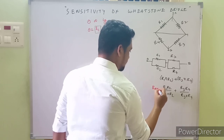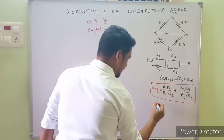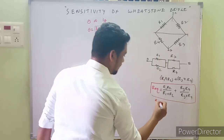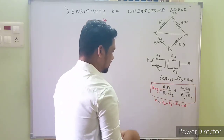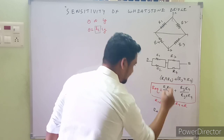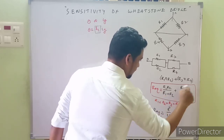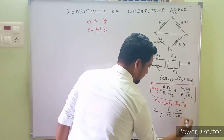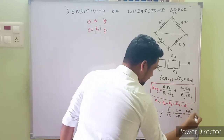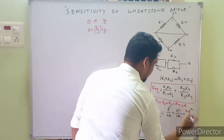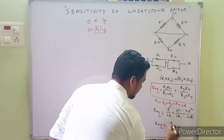For the special case where all resistances are equal — R1 = R2 = R3 = R4 = R — the equivalent resistance simplifies. Each parallel pair gives R²/2R = R/2, and the two halves in series give R_eq = R. So when all resistances are equal, the Thevenin's equivalent resistance is simply R.